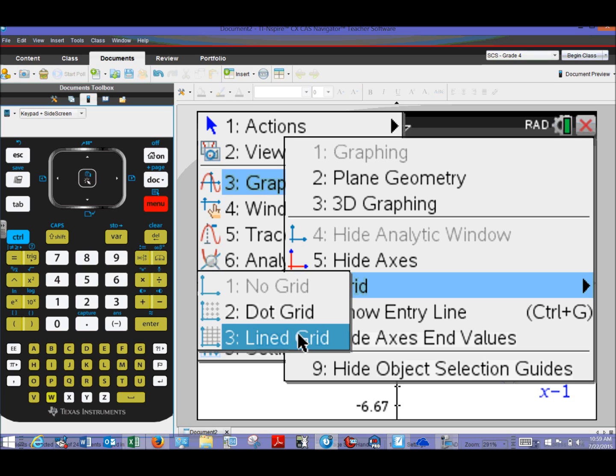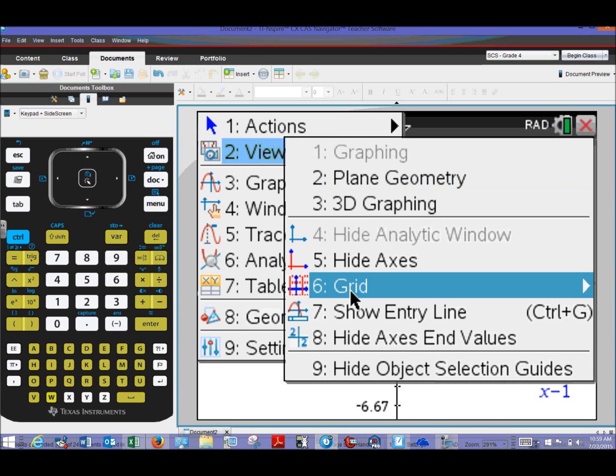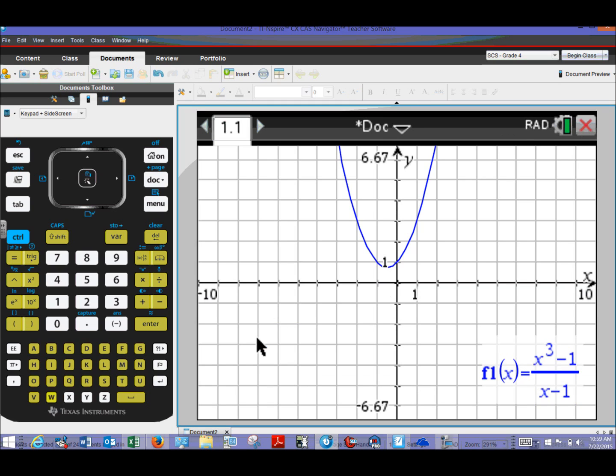Now that's a lot of sub-menus. The shortcut is Menu 263. Let's do that again here. Menu 2, 6, and then 3. But nonetheless, that'll bring up a nice lined grid there for you.